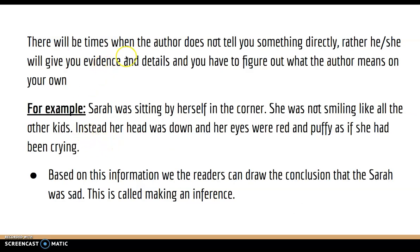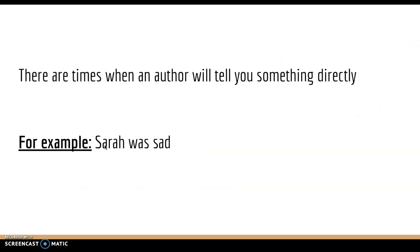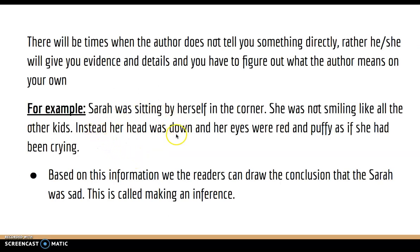However, there will be times when the author does not tell you something directly. Rather, he or she will give you evidence and details, and you have to figure out what the author means on your own. So let's take another example. Sarah was sitting by herself in the corner. She was not smiling like all the other kids. Instead, her head was down. Her eyes were puffy — red, as if she had been crying. Based on all of this information, we can make an inference that Sarah was sad. In this example, we as the readers have to determine that she was sad on our own; the author does not tell us that she was sad.